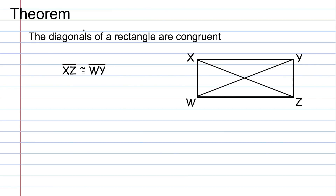Continuing with special parallelograms, we move away from a rhombus into the idea of a rectangle. The diagonals of a rectangle are congruent. Unlike the diagonals of a rhombus, the diagonals of a rectangle are congruent. For this diagram, segment XZ is going to be congruent to segment WY. Remember, the diagonals of a rectangle are congruent.